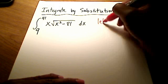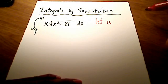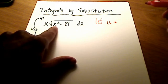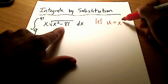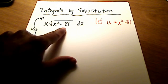I'm going to start off by saying let's let u, our variable for substitution, be equal to what's inside of the square root here. In this case it's the x squared minus 81. You're going to see why I'm picking on that in just a second here.